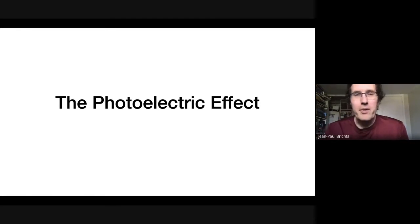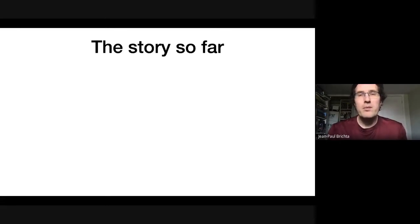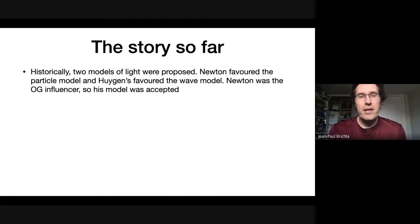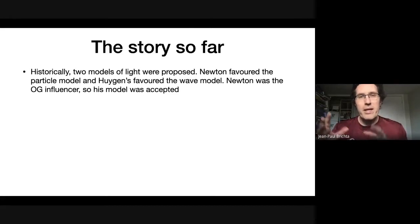Hello everyone. In this lesson, I'm going to tell you about the thing that really put Einstein's name on the map, and that is the photoelectric effect. The story so far in this unit is that we had two historical models of light proposed. One was proposed by Newton — the particle model — so Newton thought that light was made up of particles. Huygens was looking at the similarities between light and water and sound, and so Huygens thought that light was made of waves.